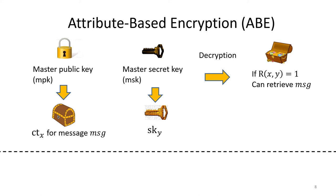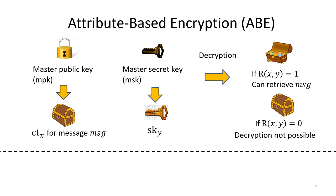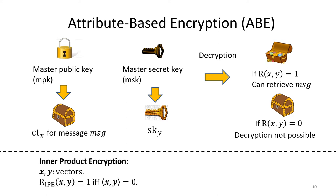Namely, if R(x, y) equals to 1, the ciphertext can be decrypted using the secret key. Otherwise, the decryption is not possible. In this presentation, we introduce two relevant predicates for ABE.